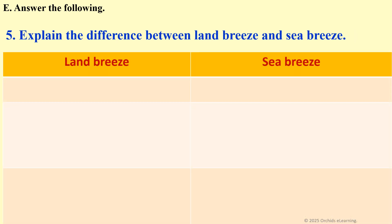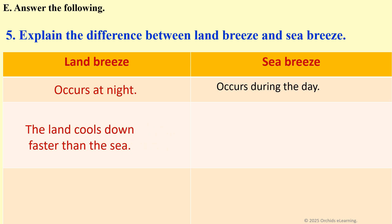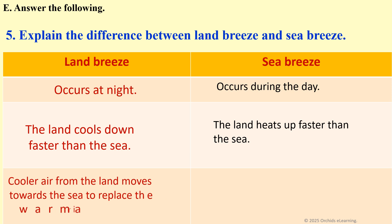Explain the difference between land breeze and sea breeze. Land breeze occurs at night. Sea breeze occurs during the day. The land cools down faster than the sea. The land heats up faster than the sea. Cooler air from the land moves towards the sea to replace the warm air rising over the water.